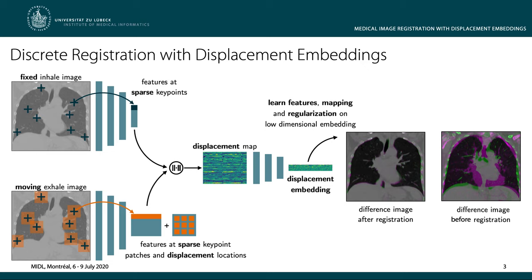The computation of a dense displacement space is very memory intensive. In this work we lay the groundwork to limit the computational burden by sampling keypoints that form an irregular grid, and predict the final registration from a low-dimensional embedding of the displacement maps.